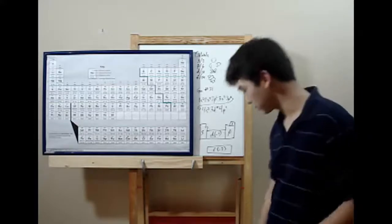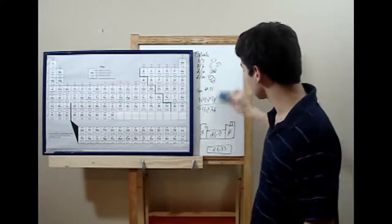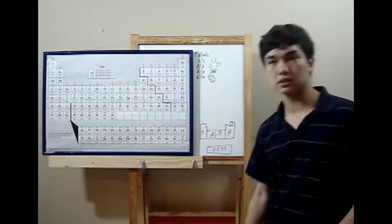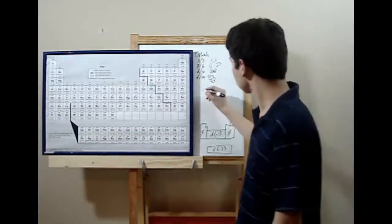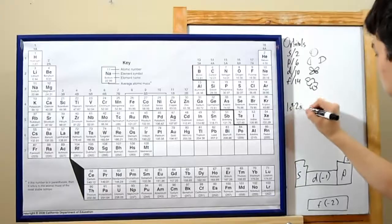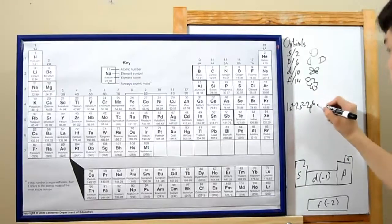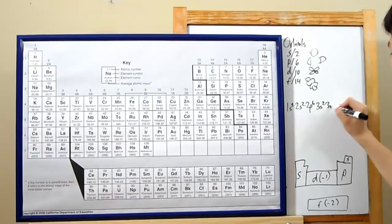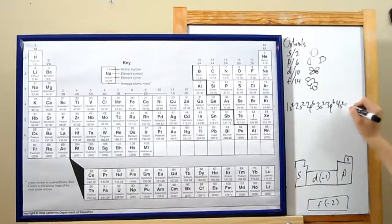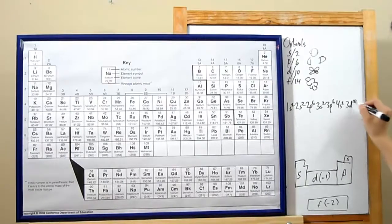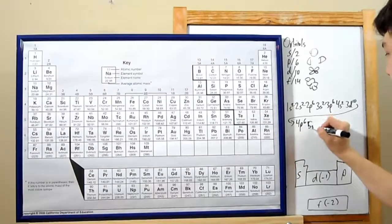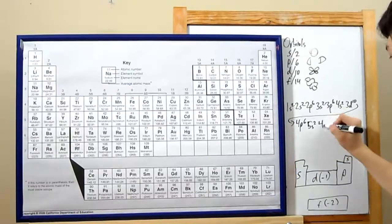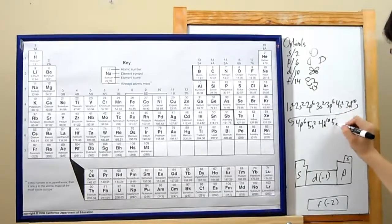But now you've probably realized that some electron configurations can get hideously long. So let me write xenon out for you. That's atomic number 54. That's 1s2, 2s2, 2p6, 3s2, 3p6, 4s2, 3d10. Let me just bring this down here since I'm running out of room. 4p6, 5s2, 4d10, 5p6.